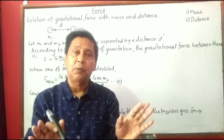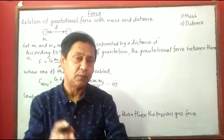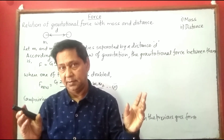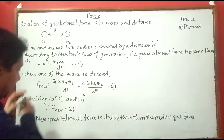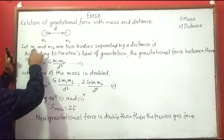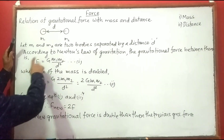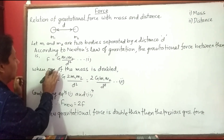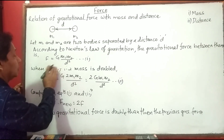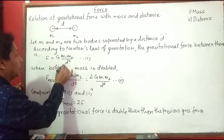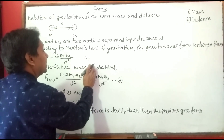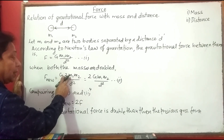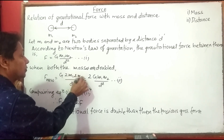Now I want to change the question. Instead of the previous question, if the question is: what will be the effect on gravitational force between two bodies when both the masses are doubled? Let m1 and m2 are two bodies separated by a distance d. According to Newton's law of gravitation, the gravitational force between them is F = G·m1·m2 / d². This part is the same as before. When both the masses are doubled, new gravitational force will be G·(2·m1)·(2·m2) / d².